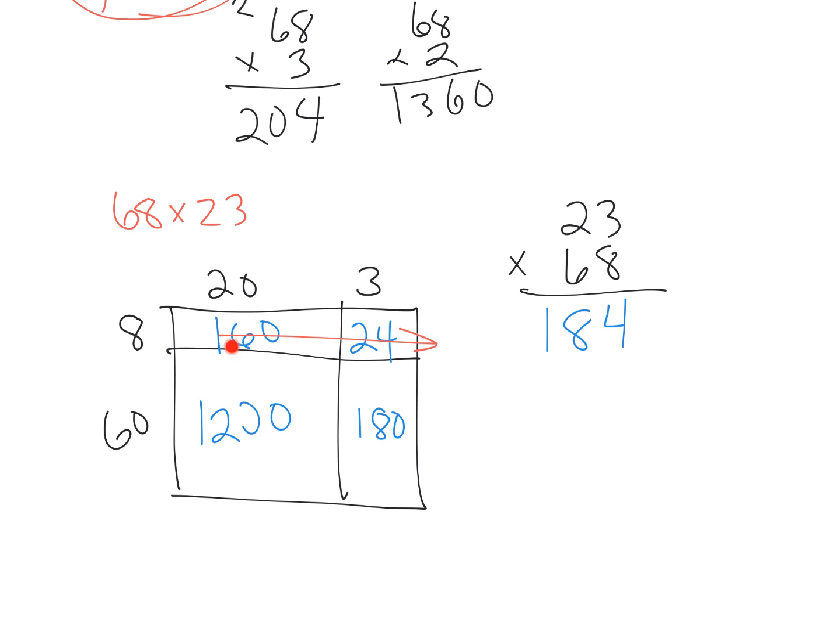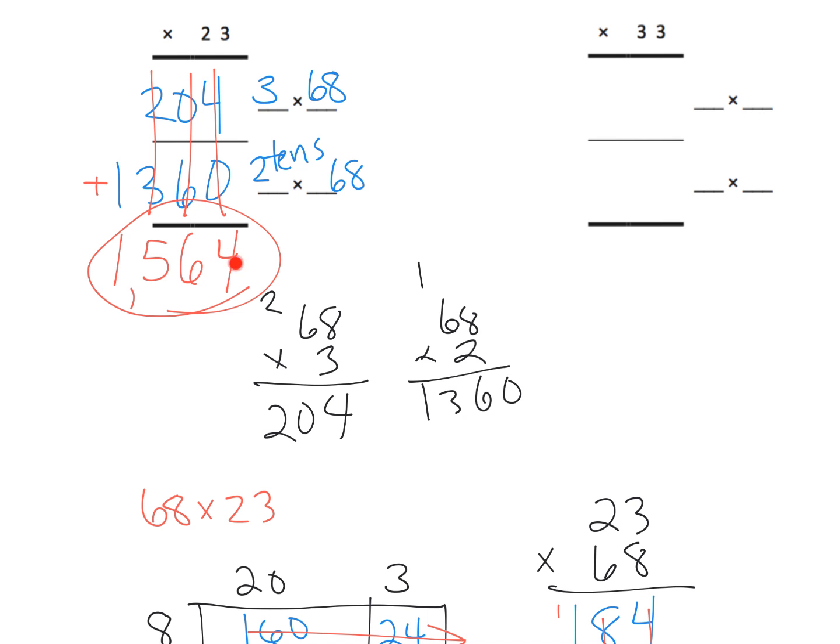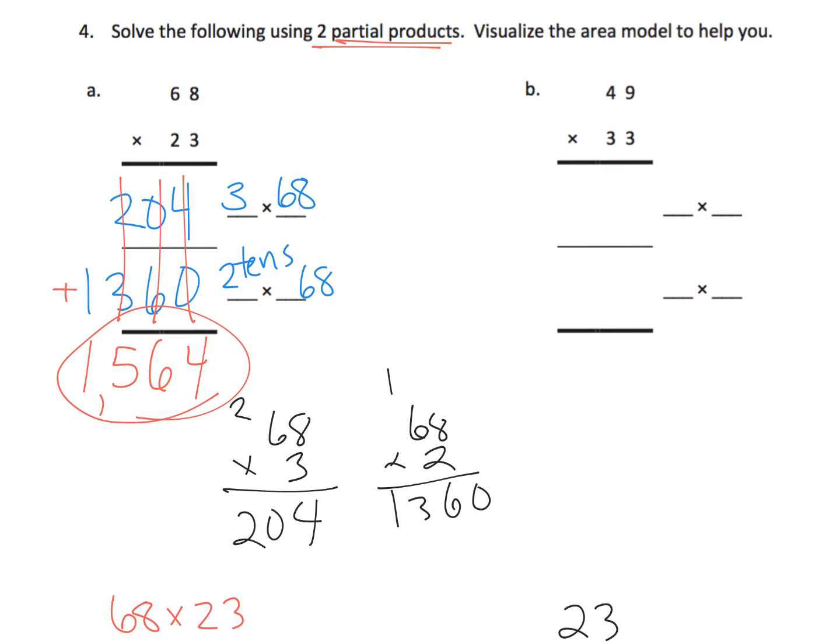So this one might be a little trickier, but we're going to add these two numbers. So you get 1,200 plus 180, and the 200 and the 100 are in the same column. So we end up with 1,380. And now when we add those together, 4 and 0 is 4, 8 and 8 is 16, carry the 1. And then we've got 1 plus 1 plus 3 is 5, and then 1. And so the answer is 1,564. And that's exactly what we knew the answer was supposed to be using the two partial products.